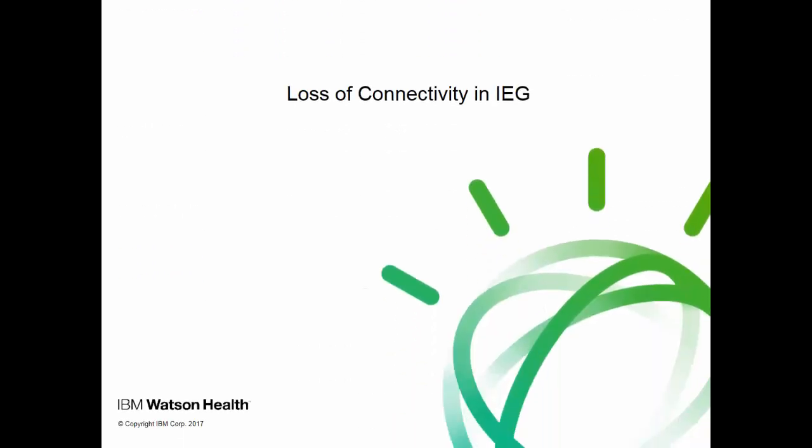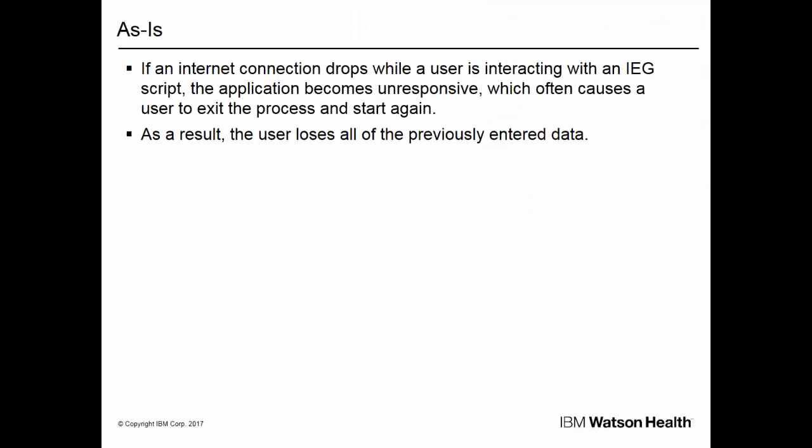Now we'll discuss the second IEG enhancement, which deals with IEG's behavior when faced with a loss of network connectivity. Prior to version 702, if an internet connection drops while a user is interacting with an IEG script, the application becomes unresponsive, which often causes a user to exit the process and start again. As a result, the user loses all of the previously entered data.